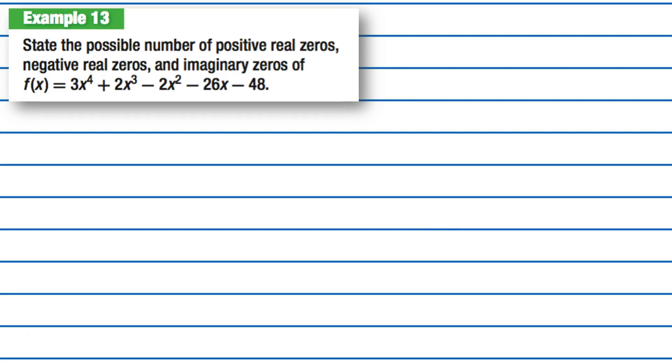Alright, so now let's try example 13. We want to state the possible number of positive real zeros, negative real zeros, and imaginary zeros for this f of x.